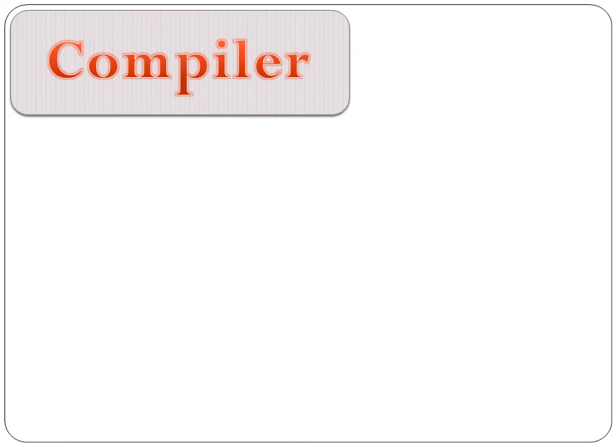Next is compiler. This is a program that translates a source program into machine language. First of all you must know what a source program is. This is a program that is written in a language other than machine code. Programs written in any language other than machine code are called source programs. Programs written in high level languages are also called source programs. The translator used to convert a source program into machine language or machine code is called a compiler.